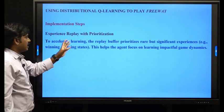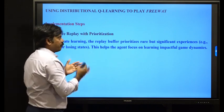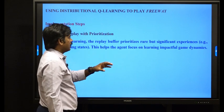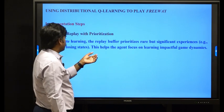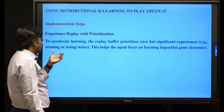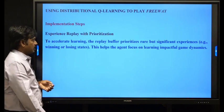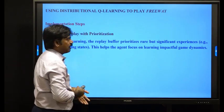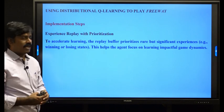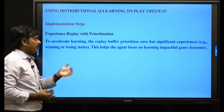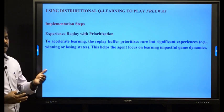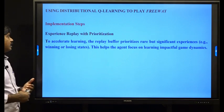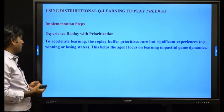To accelerate learning, the replay buffer prioritizes rare but significant experiences — such as winning or losing states. This helps the agent focus on learning impactful game dynamics, and the replay buffer prioritizes transitions that move the agent toward the winning side.